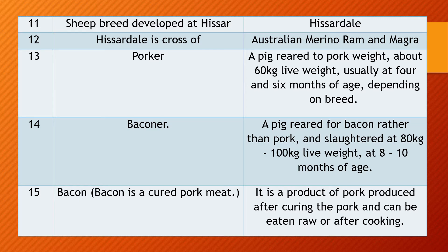Question 13. Important — Porker. What is a porker? Answer: a pig reared to pork weight, which is about 60 kg live weight, usually achieved at 4 to 6 months of age depending on the breed. That is called a porker.